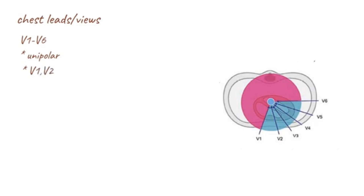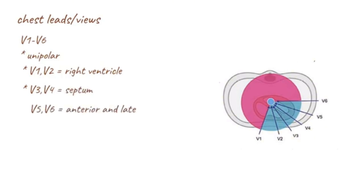These leads look at the heart in the horizontal plane from the front and left side. Leads V1 and V2 look at the right ventricle. Leads V3 and V4 look at the center, while leads V5 and V6 look at the anterior and lateral walls of the left ventricle.